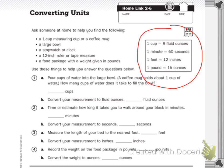Number one says pour cups of water into the large bowl. A coffee mug holds about one cup of water. How many cups of water does it take to fill the bowl? My large bowl took six cups of water to fill the bowl.